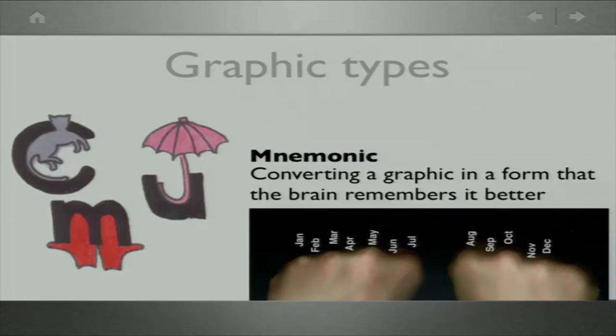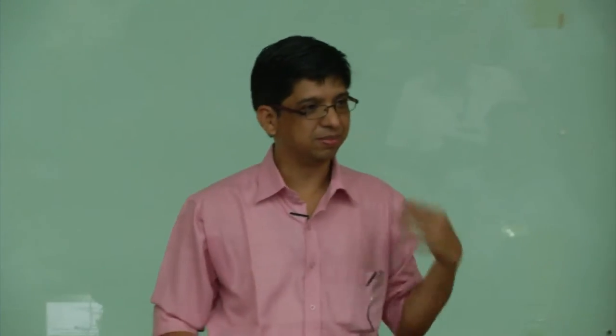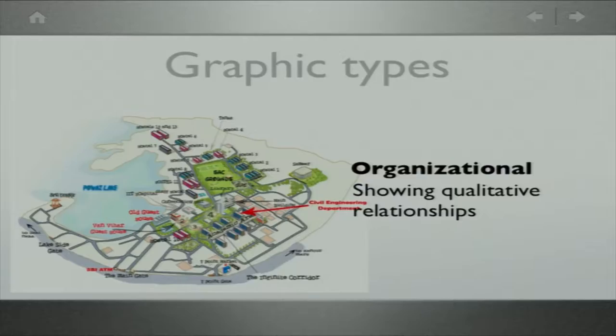There is another interesting type of graphic called mnemonic graphic. When somebody asks you how many days are in October, a lot of people start doing this — it is just embedded in your mind so much that you do not forget it. This is associative graphic memory. These are graphics used for memory recall purpose.